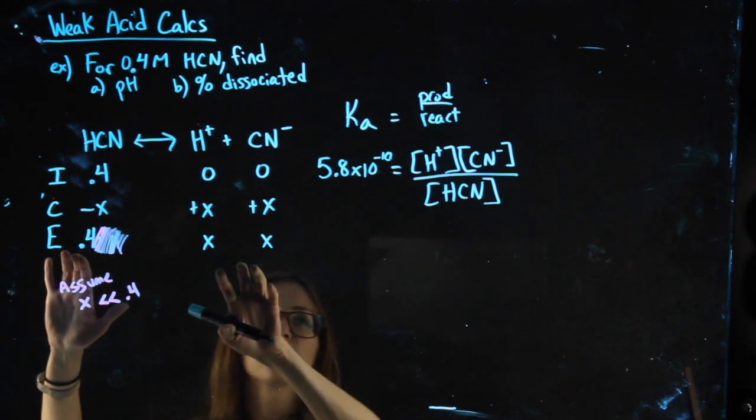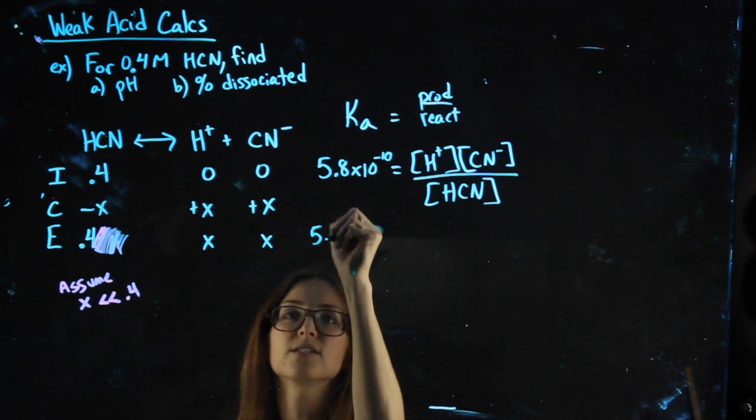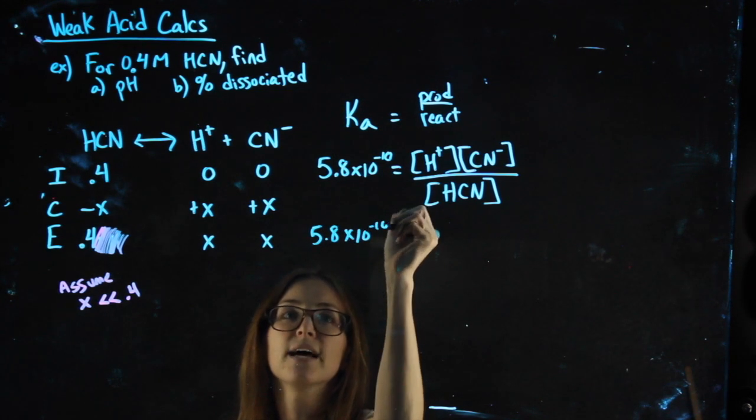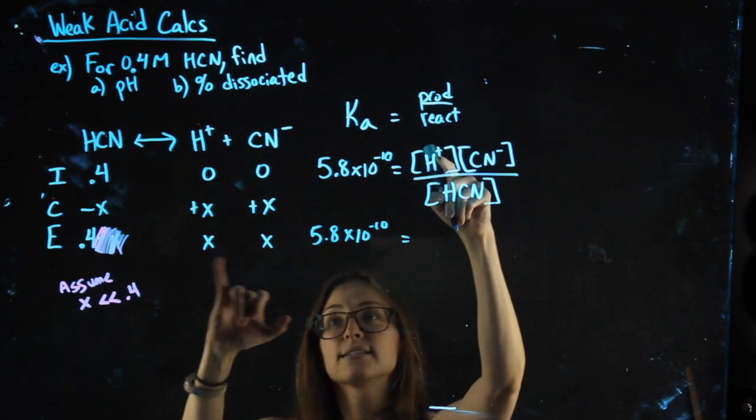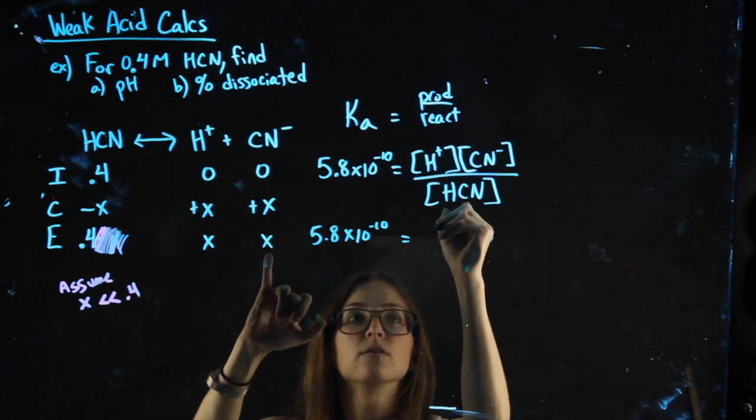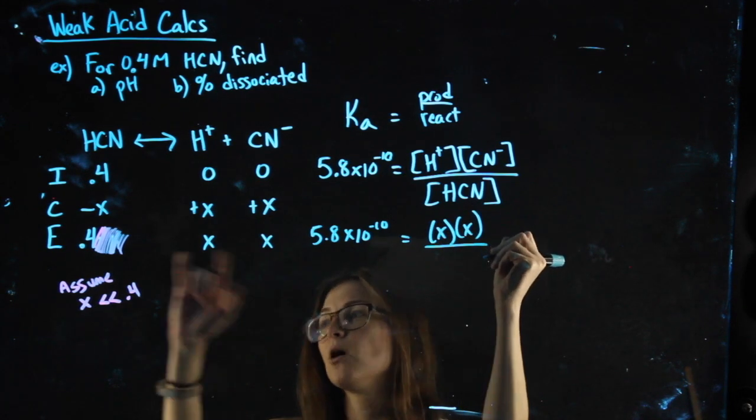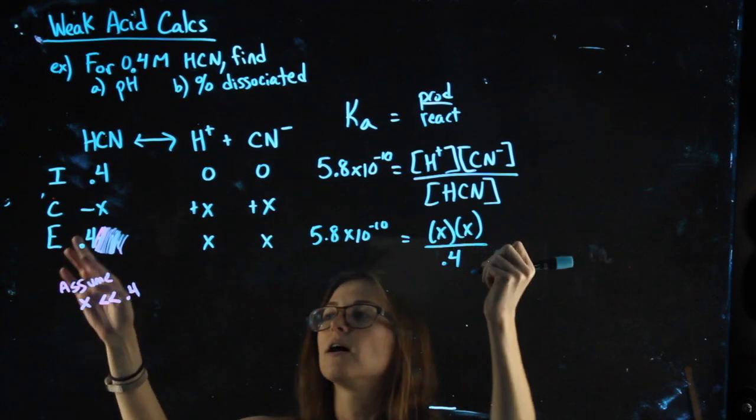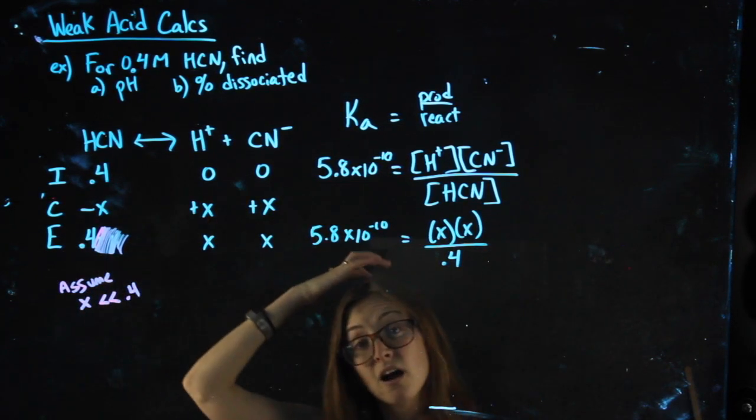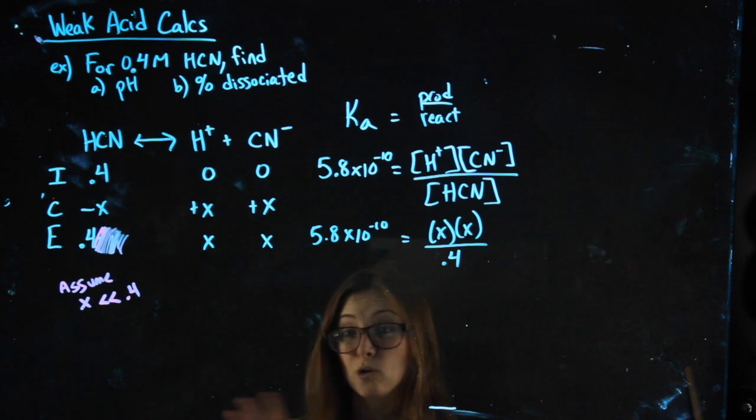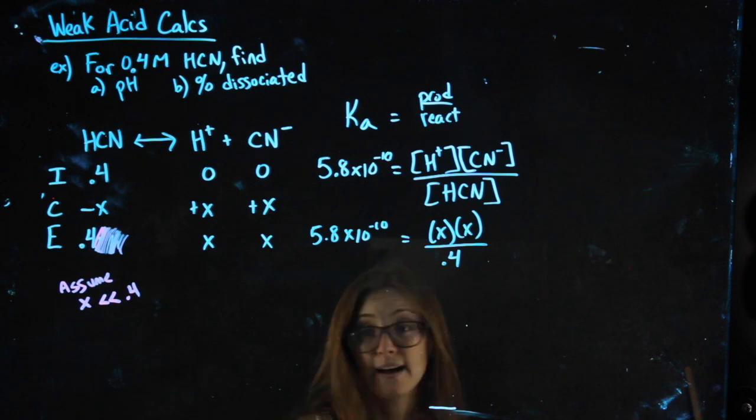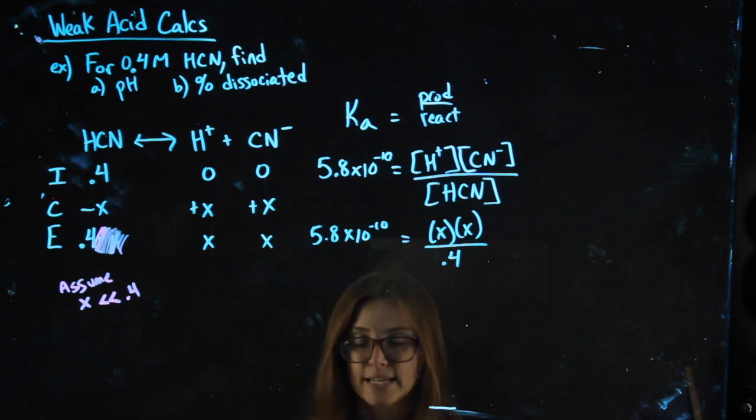I can then plug my equilibrium values in, so keeping this 5.8 times 10 to the negative 10th, it equals x times x. If you want to just write x squared, you can. I'll do that on the next step. Over 0.4. Again, we ignored the minus x. You can do it with the minus x there. Do it once. You'll see that our final answer is not that different, and it's not worth the complicated math. In fact, I take that back. Don't even. Just trust me. Don't even do it. It's not worth it.